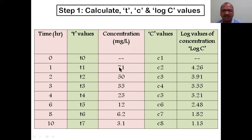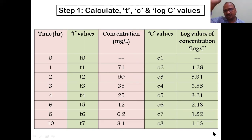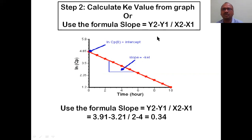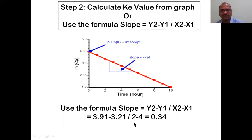Step two: calculate Ke. Plot log concentration on y-axis and time on x-axis. Use the slope formula: (Y2 - Y1) / (X2 - X1). Here: (3.91 - 3.21) / (2 - 4) = 0.34. So Ke, the elimination rate constant, equals 0.34. Step three: calculate C0. C0 = C1 / Ke... actually C0 is back-extrapolated; using the first value 71 divided by e^(Ke×t), giving approximately 100.